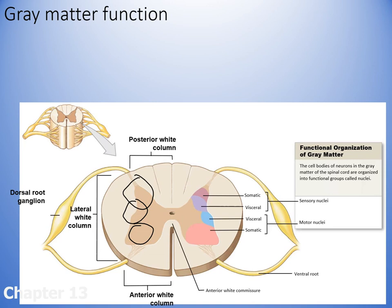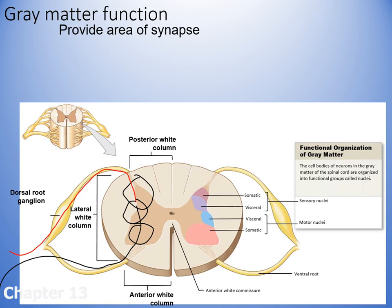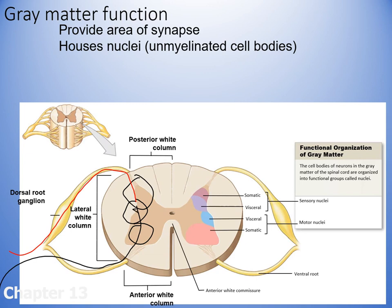Gray matter is an area where neurons meet up. Sensory neurons come in and meet up with a motor neuron that then leaves. The motor neuron's cell body — and therefore its nucleus — is located up near the synapse, pretty much in the gray matter. Nuclei are not myelinated; only axons are myelinated. This is why this region is gray matter — it contains a lot of cell bodies and axon terminals and not much myelin.